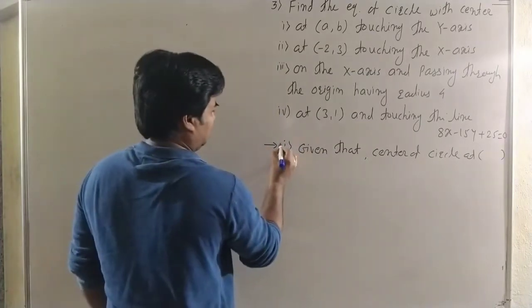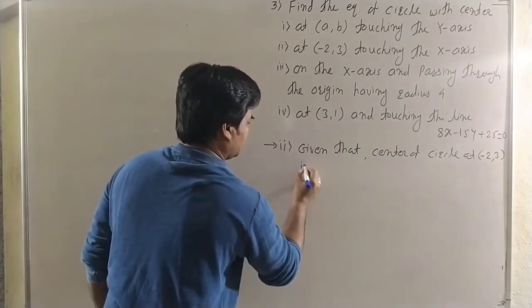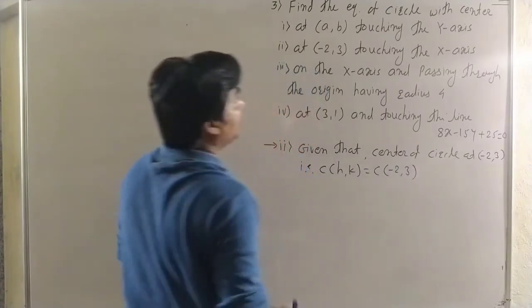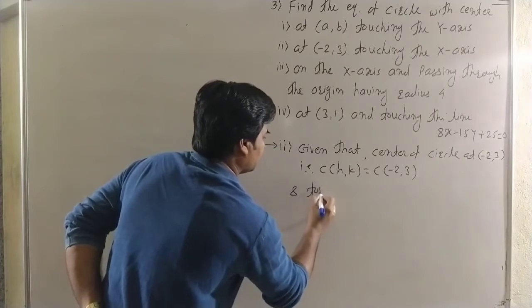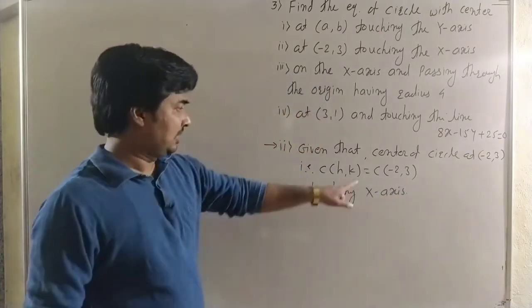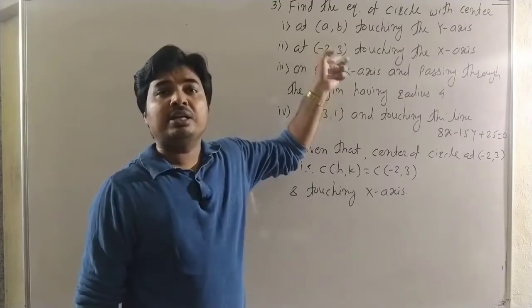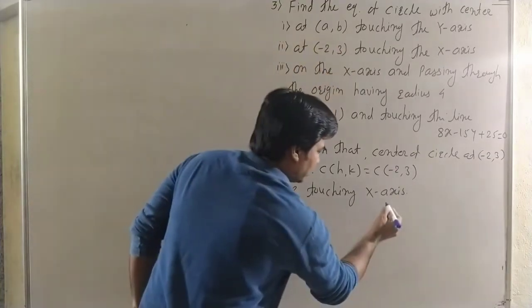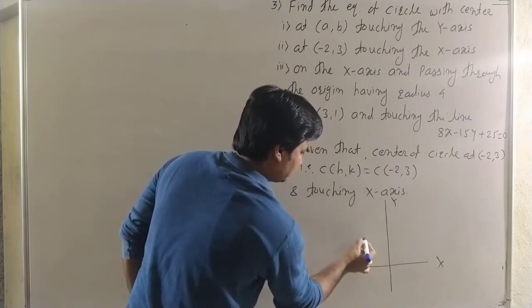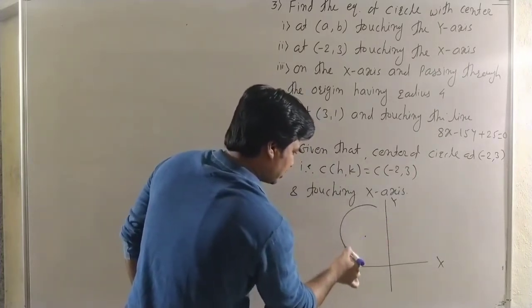Now the second example: given that the center of the circle is at (-2, 3), that is (h, k) = (-2, 3), and the circle is touching the x-axis. This center is in the second quadrant. We can draw the x-axis and y-axis, place the center at (-2, 3), and draw the circle touching the x-axis.